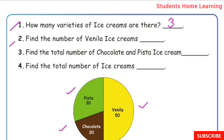Second one: find the number of vanilla ice creams. Vanilla ice creams are 50. Answer: 50. Third one: find the number of chocolate and pista ice creams. Chocolate is 20 and Pista is 30. 20 plus 30 is 50. Answer: 50.